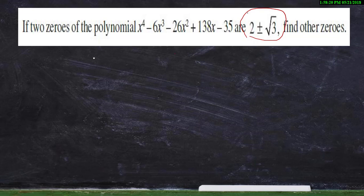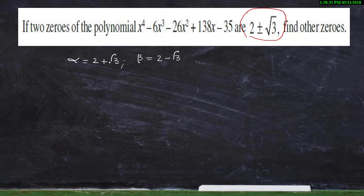Let us take one root as alpha and the other root as beta. Let alpha = 2 + √3 and beta = 2 - √3.